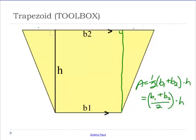What we're doing here is we're actually taking the average of the two bases. Regardless of what size they are, you average the two bases, then multiply by the height, you're getting the area.